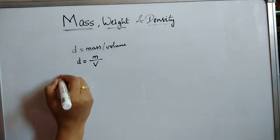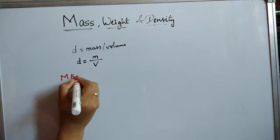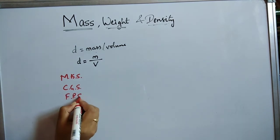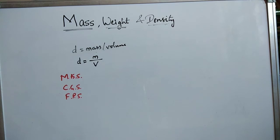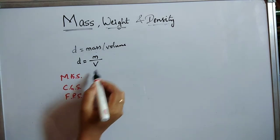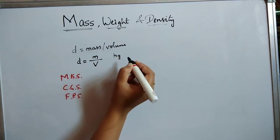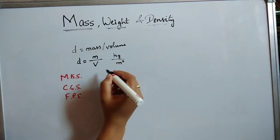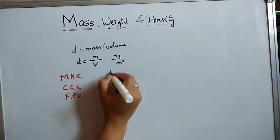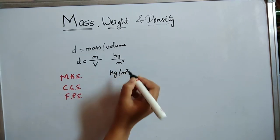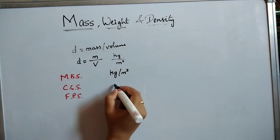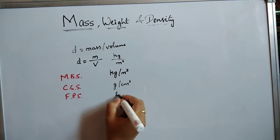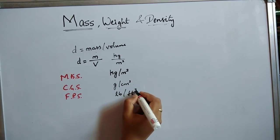The unit of density is different in different systems. In the MKS system, the unit of mass is kg and the unit of volume is m³, so the unit of density is kg/m³. In the CGS system, it is g/cm³. In the FPS system, it is pound/ft³.